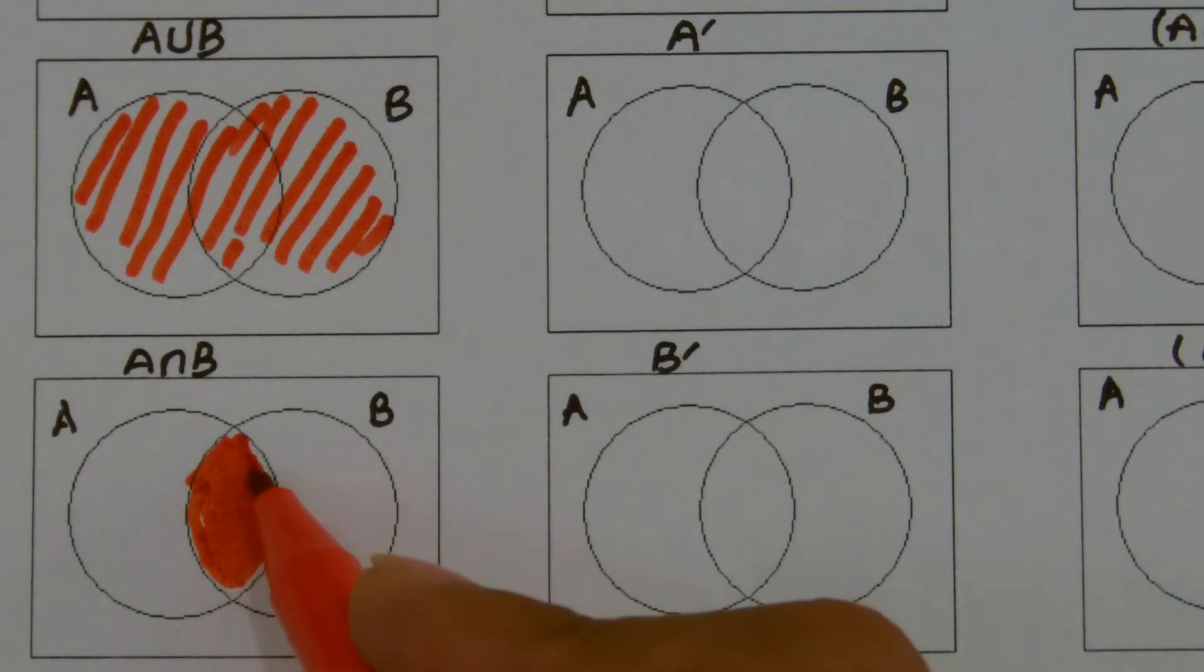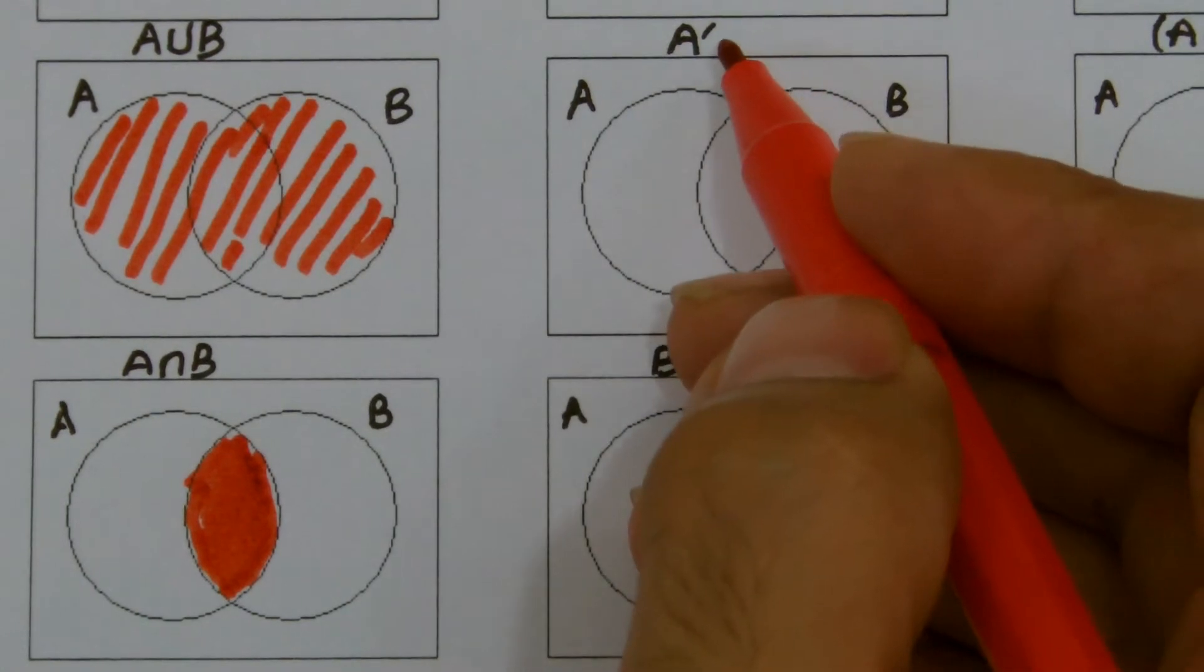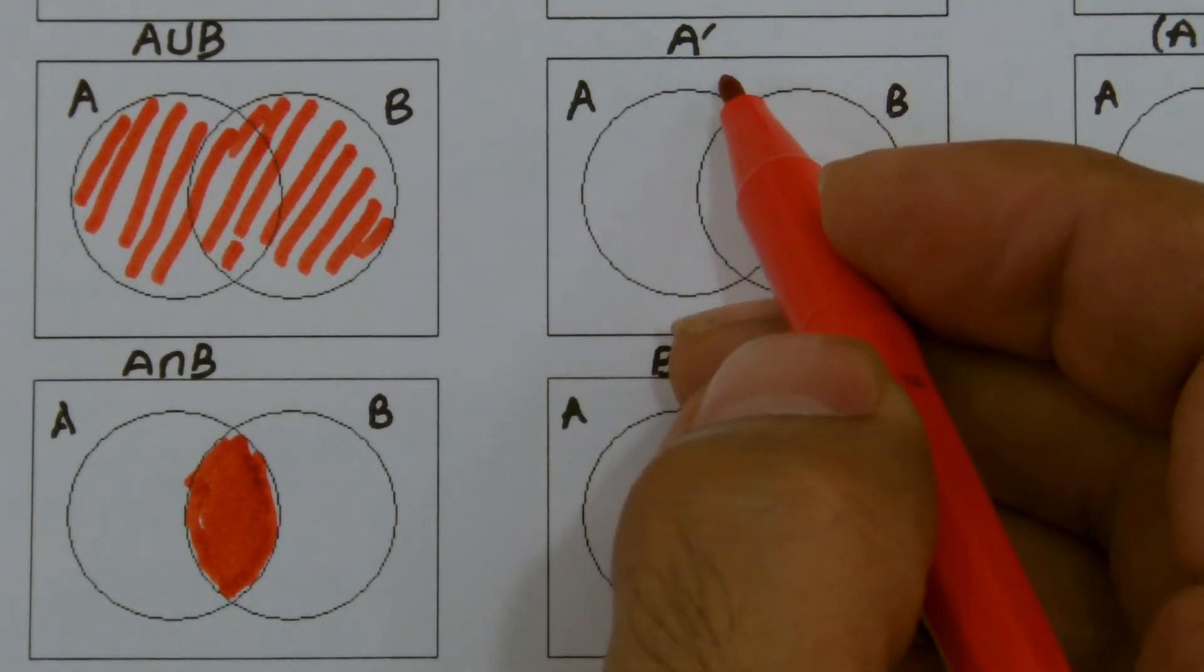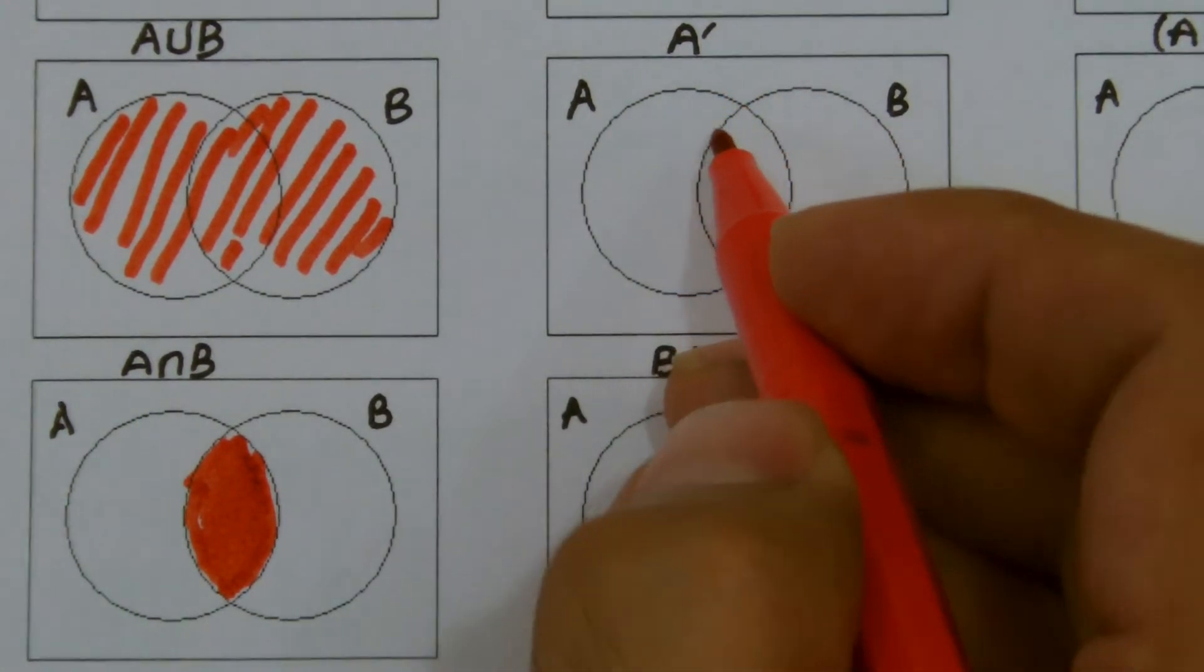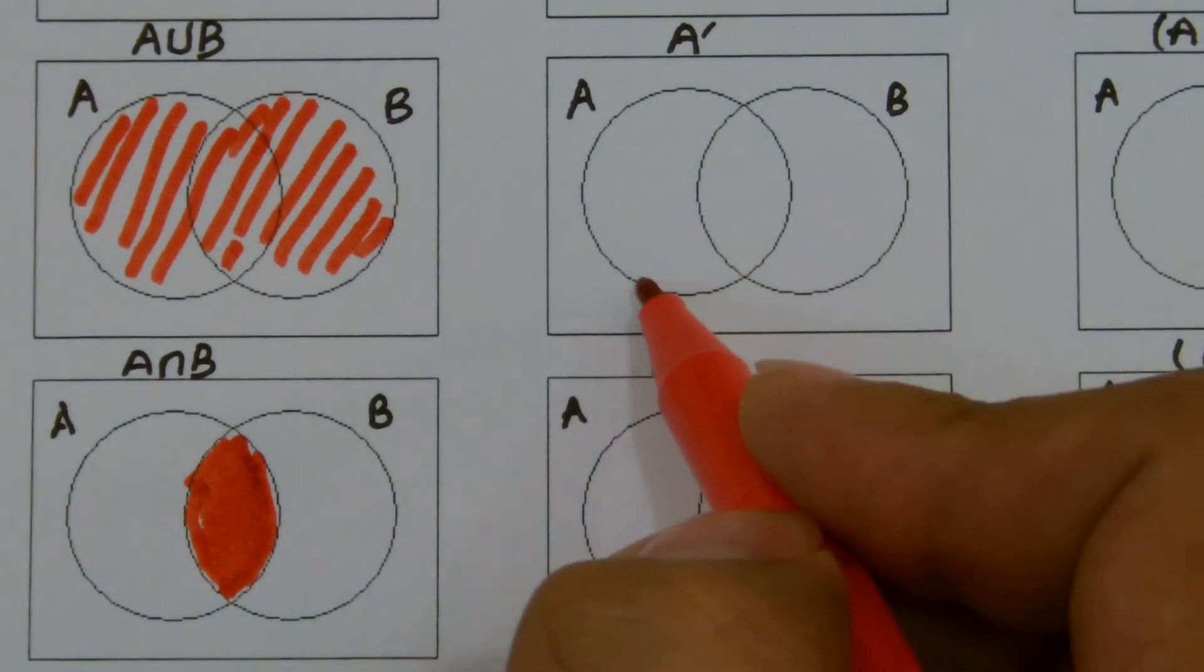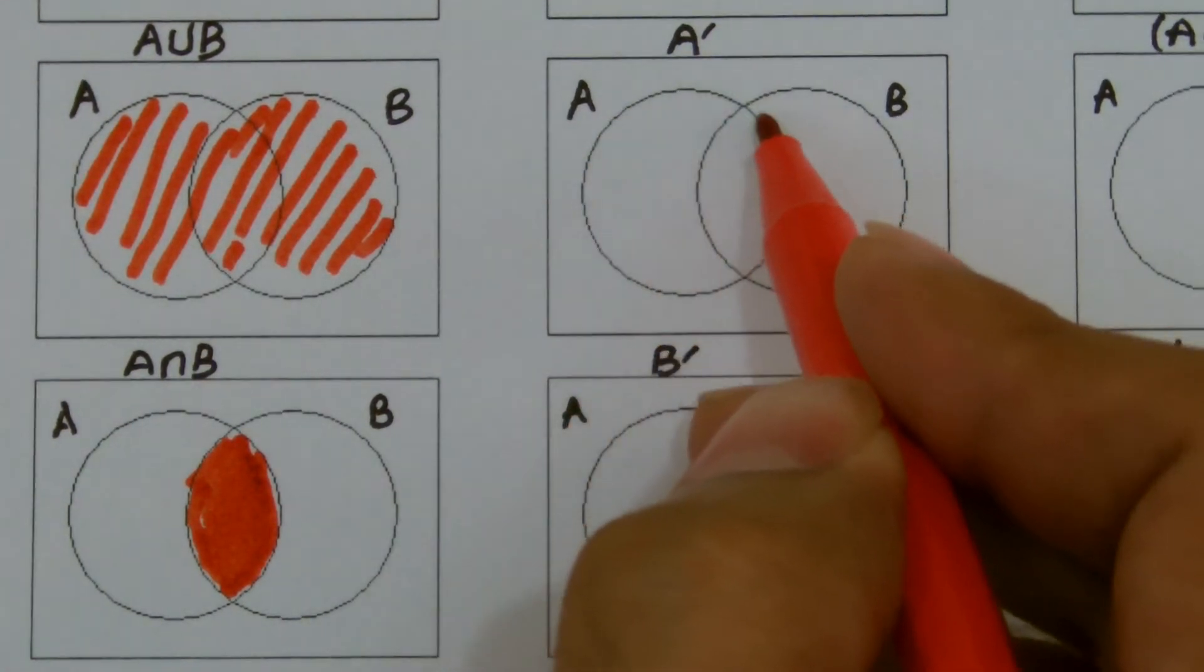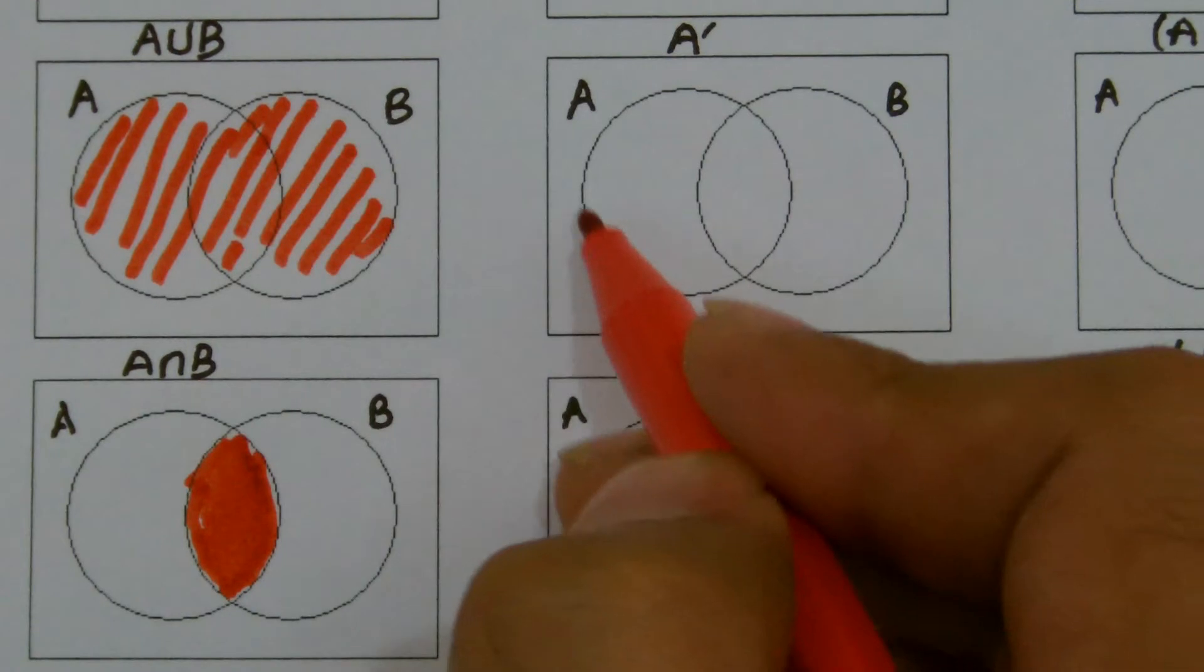Similarly, if I'm looking to shade the A complement, the next one is A complement. Now A complement means not in A. What's A actually? Let's figure out where is A. Now this particular entire circle, even the overlapping region, that reflects A.